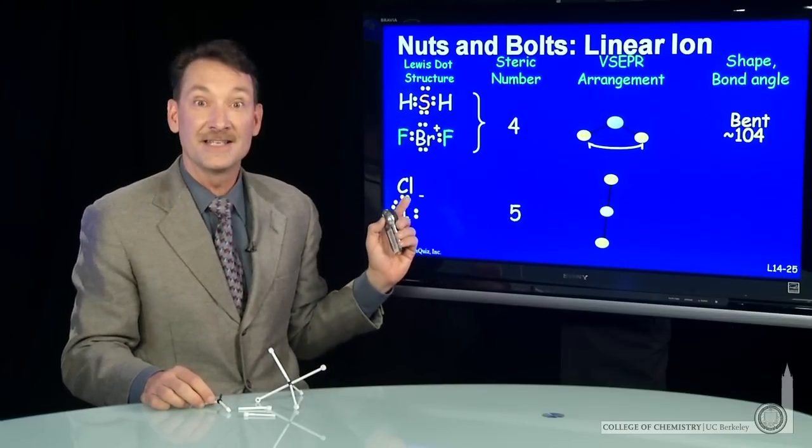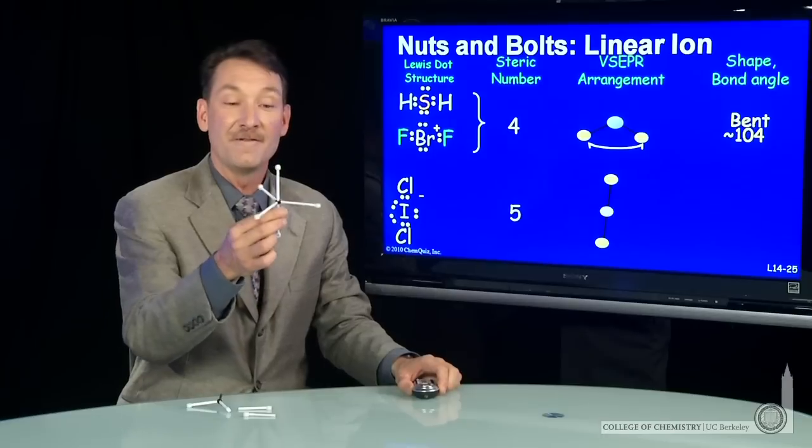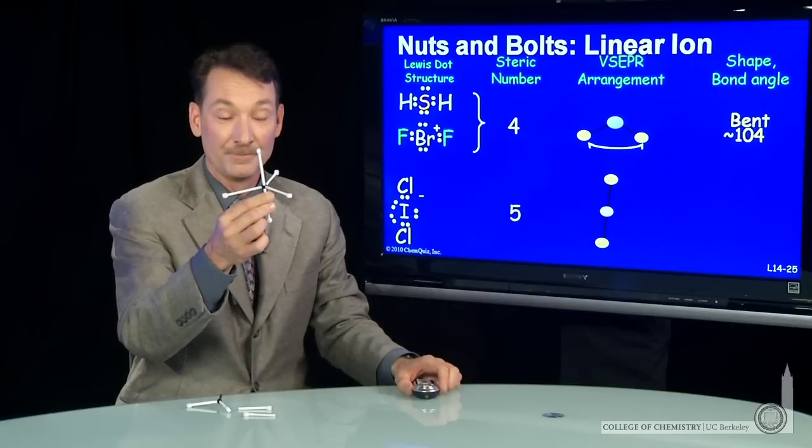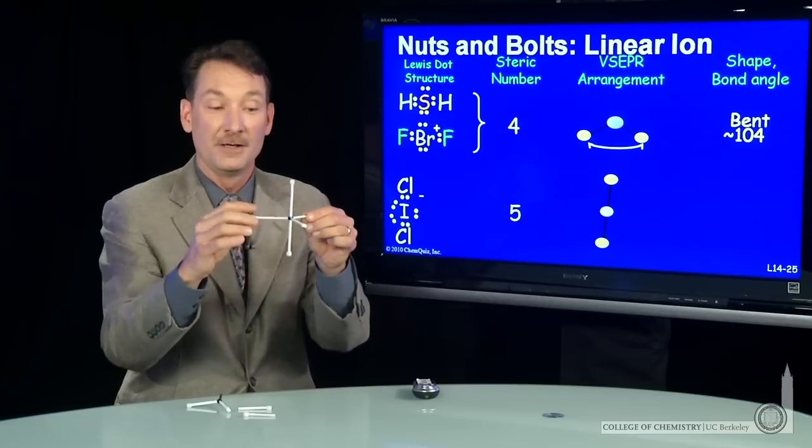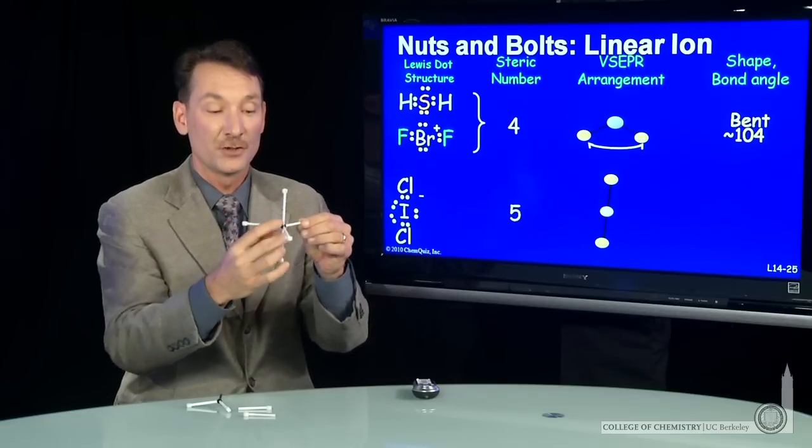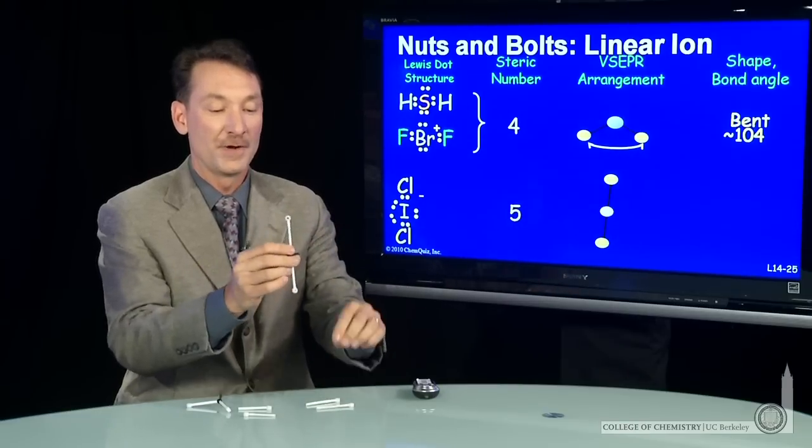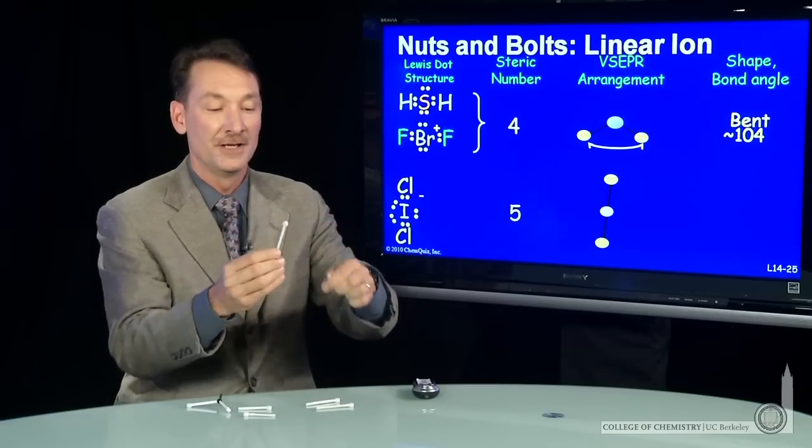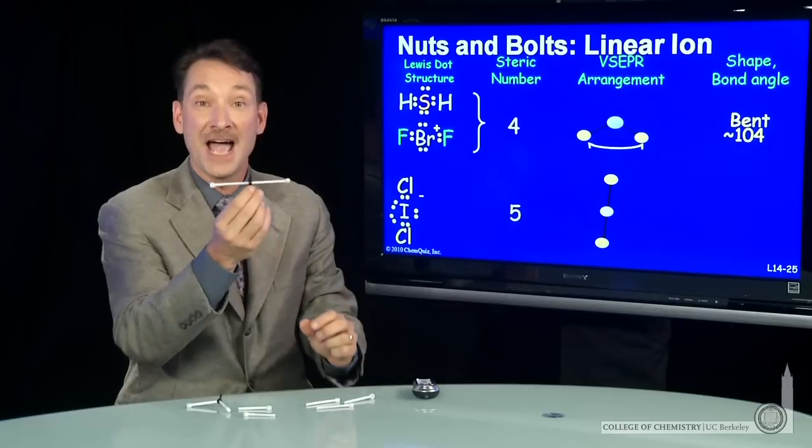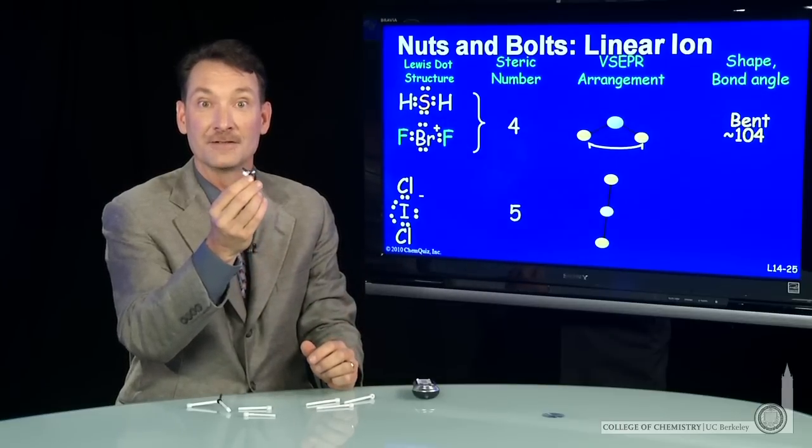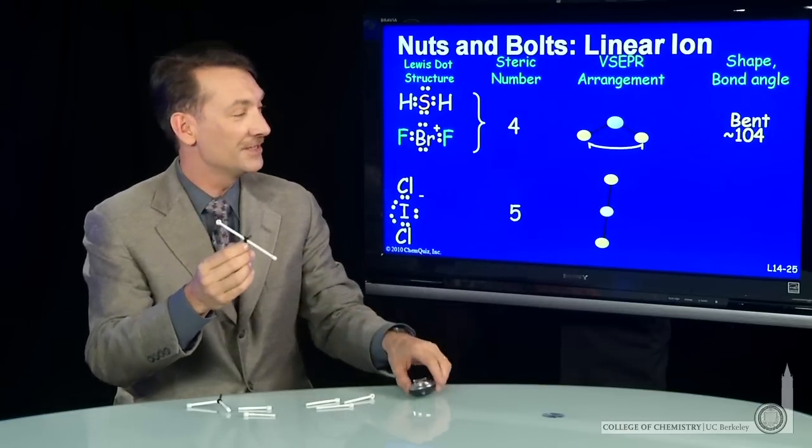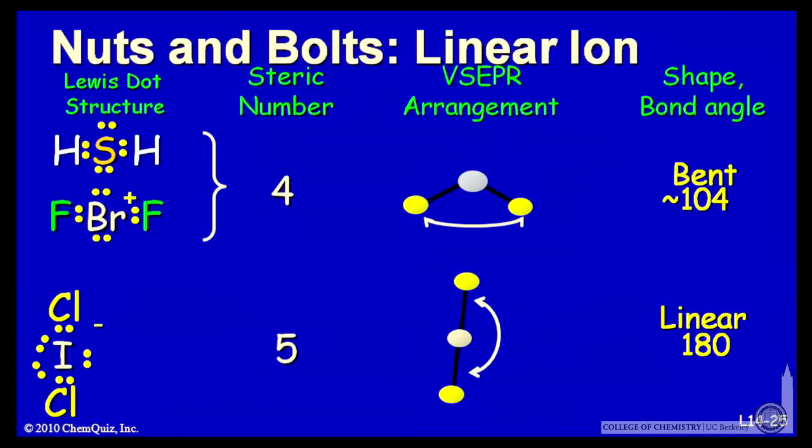For our ICl2, we have five things. Three of them along the equatorial positions are lone pairs. So we could ignore those. Taking off the three lone pairs in the equatorial position just leaves us the two axial chlorines. The two axial chlorines form a linear configuration, and that's a 180 degree bond angle.